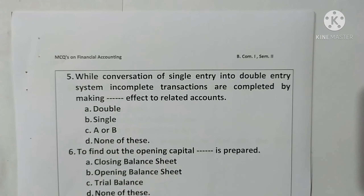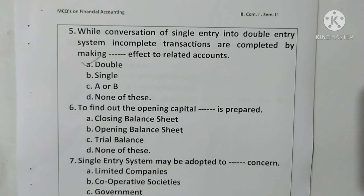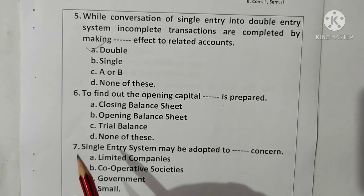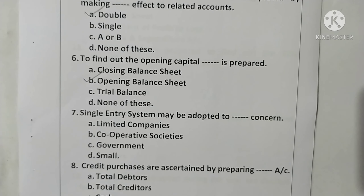Question 5: While converting from single entry system into double entry system, incomplete transactions are completed by making a double effect to related accounts. Option A is correct. Question 6: To find out the opening capital, an opening balance sheet is prepared. Option B is correct.